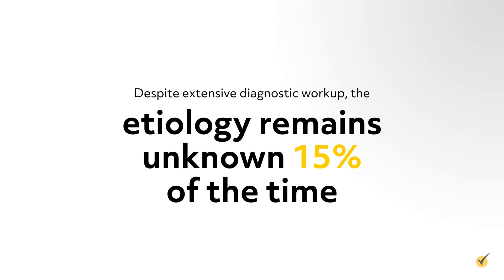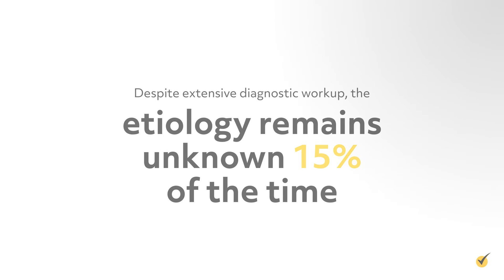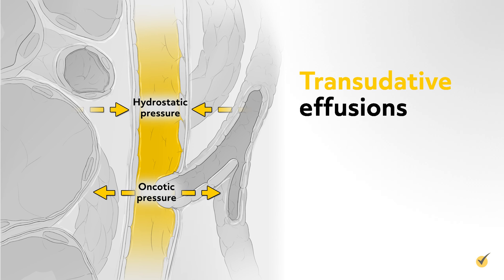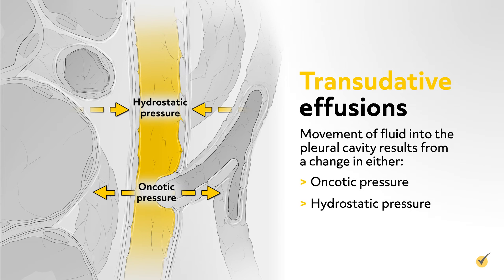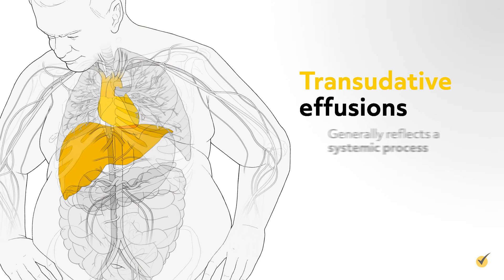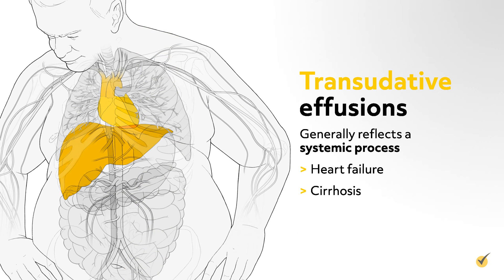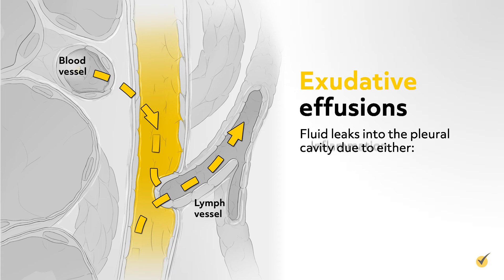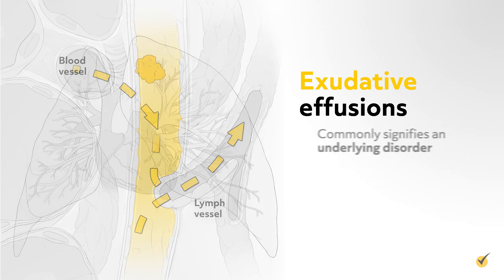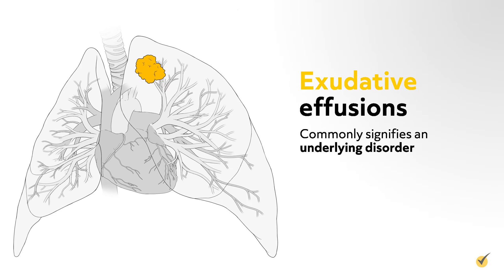Despite extensive diagnostic workup, the etiology remains unknown 15% of the time. In effusions classified as transudative, movement of fluid into the pleural cavity results from a change in either the oncotic pressure or hydrostatic pressure of the pulmonary capillaries, and generally reflects a systemic process. In effusions classified as exudative, fluid leaks into the pleural cavity due to either inflammation or blockage of blood or lymph vessels, and commonly signifies an underlying disorder like lung cancer or pulmonary embolism.